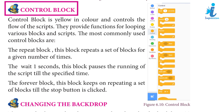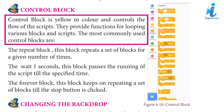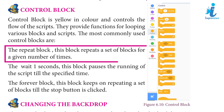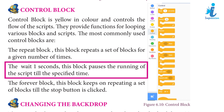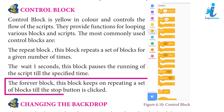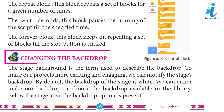Control block is yellow in color and controls the flow of the script. They provide functions for looping various blocks and scripts. The most commonly used control blocks are: the Repeat block — this block repeats a set of blocks for a given number of times; the Wait 1 Second block — this block pauses the running of the script till the specified time; the Forever block — this block keeps on repeating a set of blocks till the stop button is clicked.